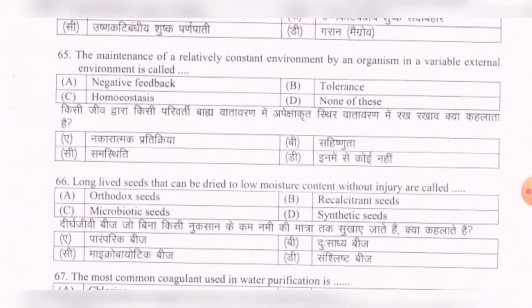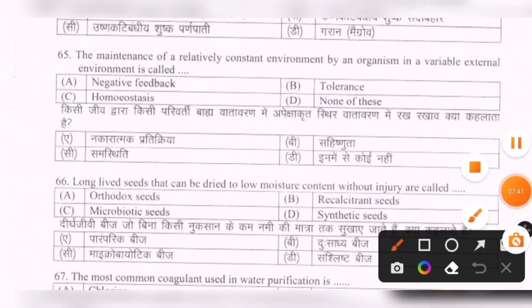Next question: The maintenance of a relatively constant internal environment by an organism in a variable external environment is called — options are: negative feedback, tolerance, homeostasis, none of these. The correct option is C — homeostasis.